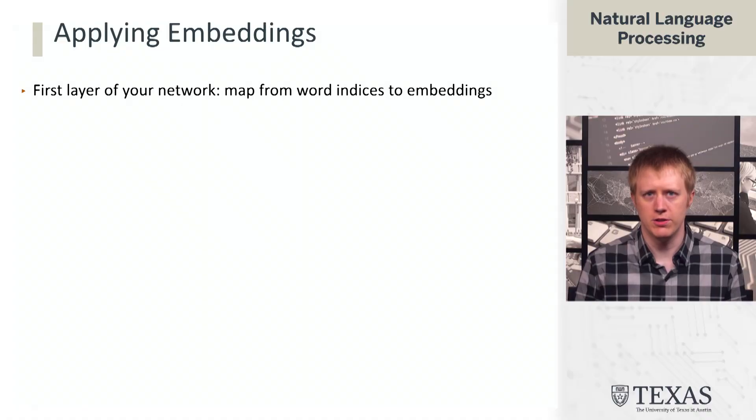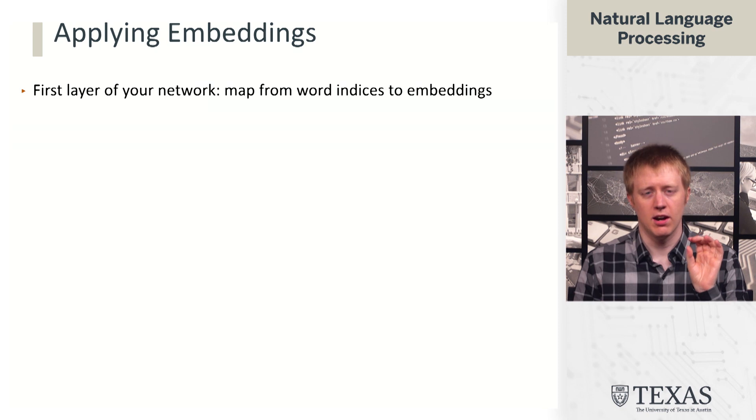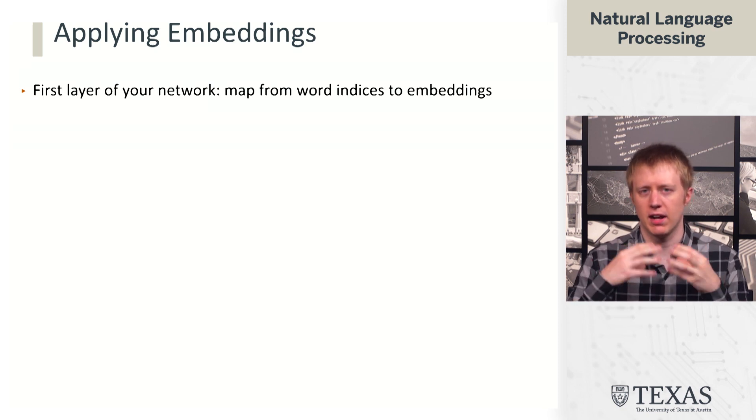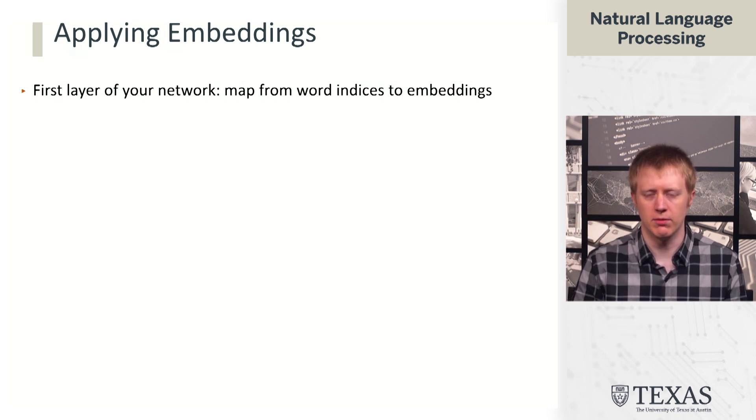In this segment, we're going to talk about how to take word embeddings and actually apply them in a basic neural net architecture for NLP: the deep averaging network. Typically, the way that embeddings get used is in the first layer of the network. The first step we do is take our indices of words, map them into our vocabulary, and then embed those words — using our embeddings to convert them into vectors.